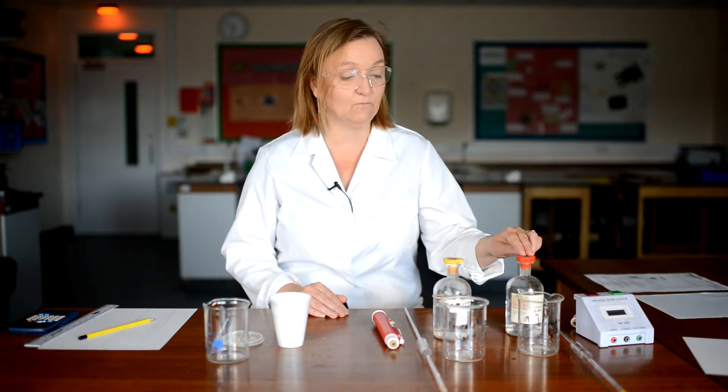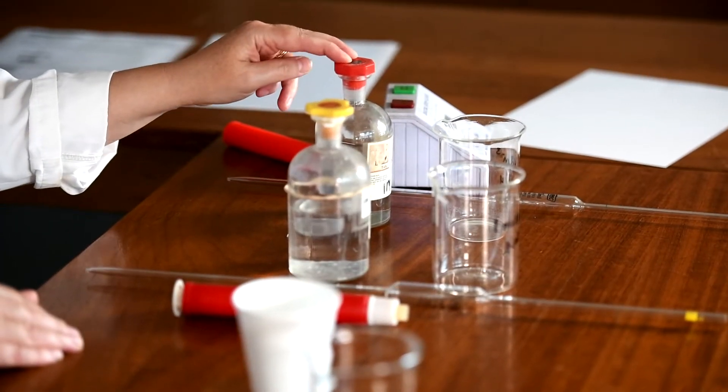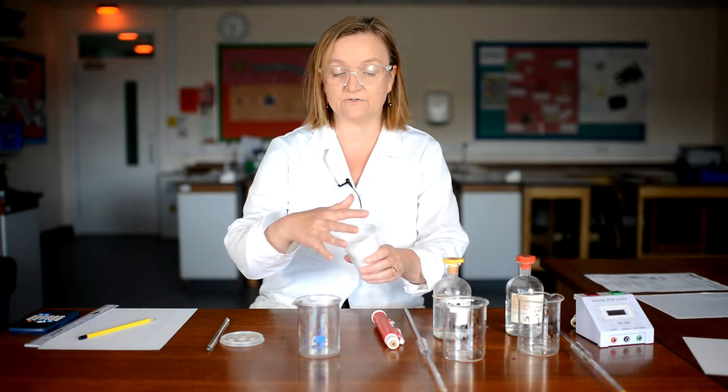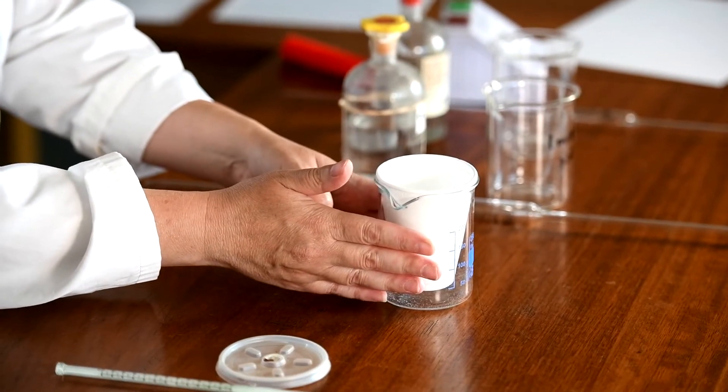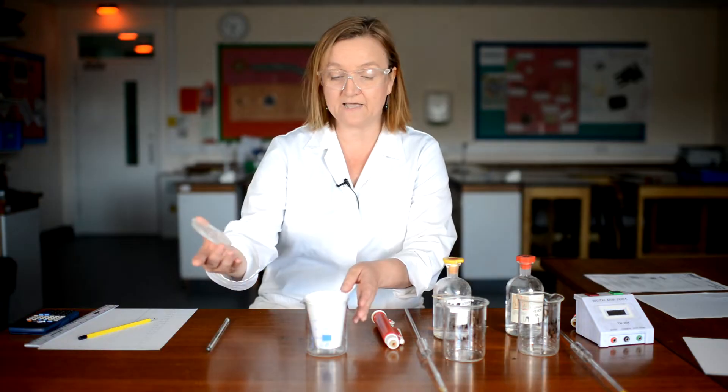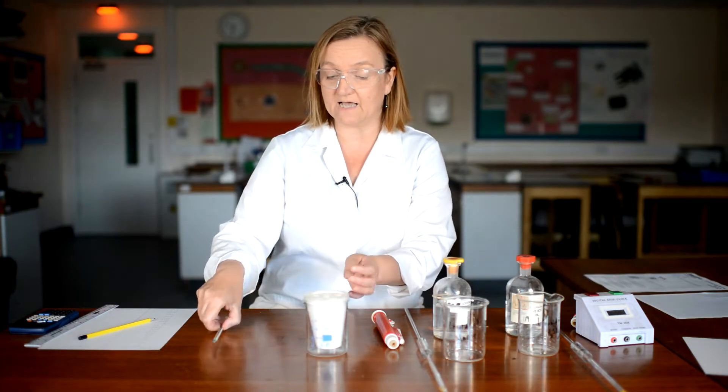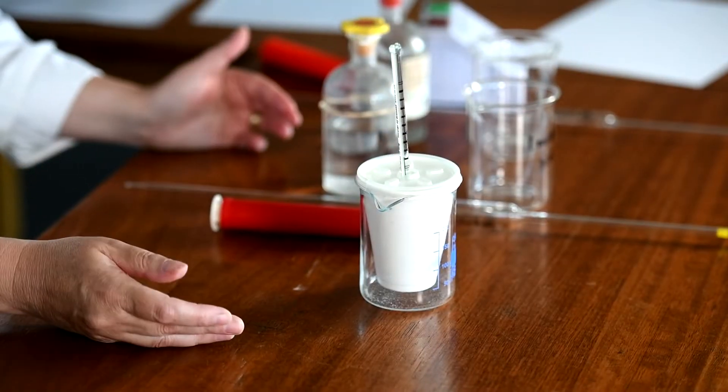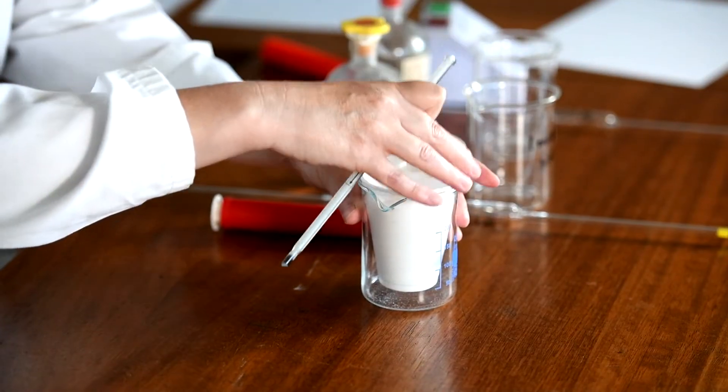I'm going to do this experiment by reacting together one molar sodium hydroxide and one molar sulphuric acid. I'm going to do it in a very simple little calorimeter made from a polystyrene cup which I'm going to sit inside a beaker just to make sure it's stable, and then I've got a lid for the top and I'm going to take the temperature during the neutralisation reaction with a thermometer.